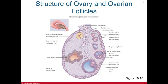The primary follicle develops into a secondary follicle approximately every 28 days under hormonal control. Fluid-filled spaces called vesicles form among the granulosa cells; these combine to form the antrum. The follicle is then called the mature follicle or Graafian follicle. The primary oocyte is pushed to one side and lies in a mass of granulosa cells called the cumulus cells. In most cases, only one follicle matures and undergoes ovulation; the others degenerate.